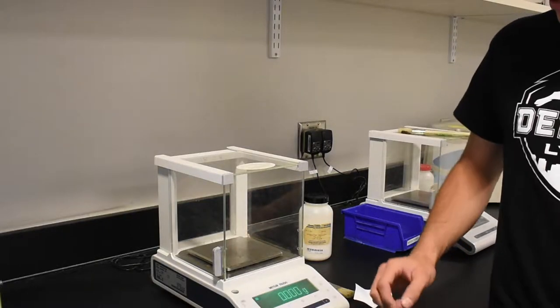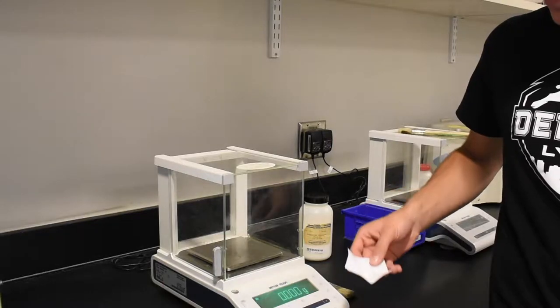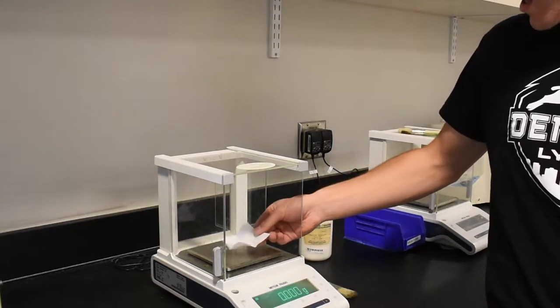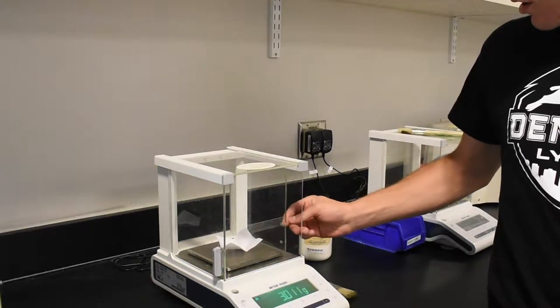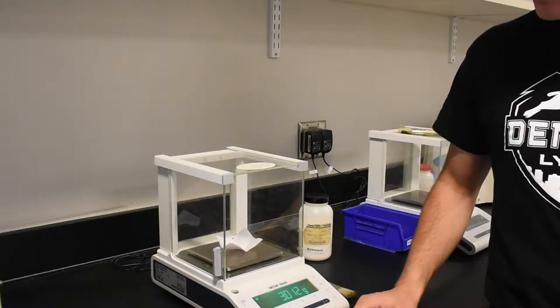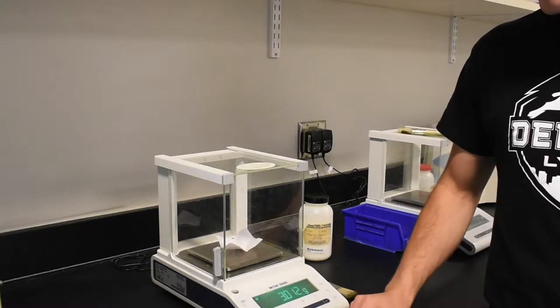Next, place your sample in an appropriate container. Place it on the balance pan. Close the door and wait for the measurement to stabilize, and then record your measurement.